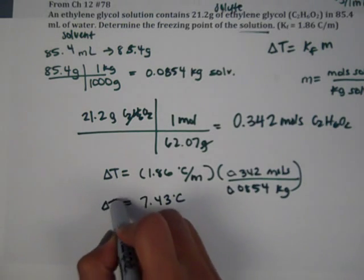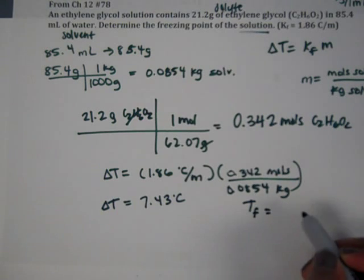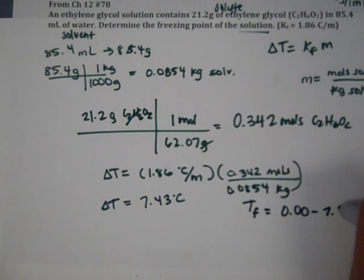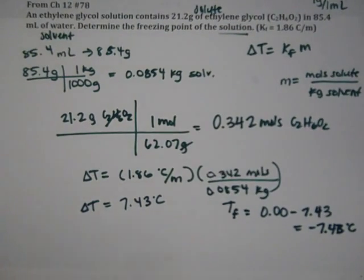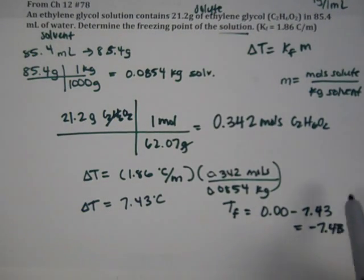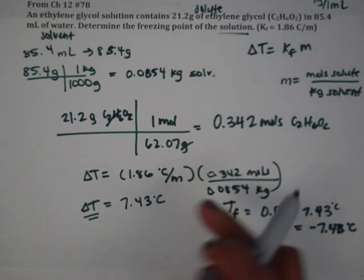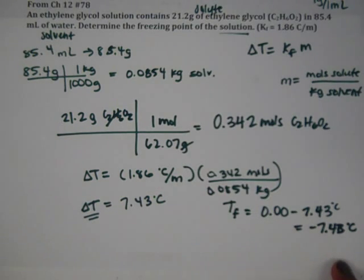That's your delta T. So our final temperature, temperature final, is going to be 0 minus 7.43, or negative 7.43 degrees Celsius. So remember, if we have freezing point depression, we always have to subtract what we get out of the delta T formula, usually from zero because we're with water. We know the freezing point of water is zero, and we subtract off the delta T temperature, and that's negative 7.43.